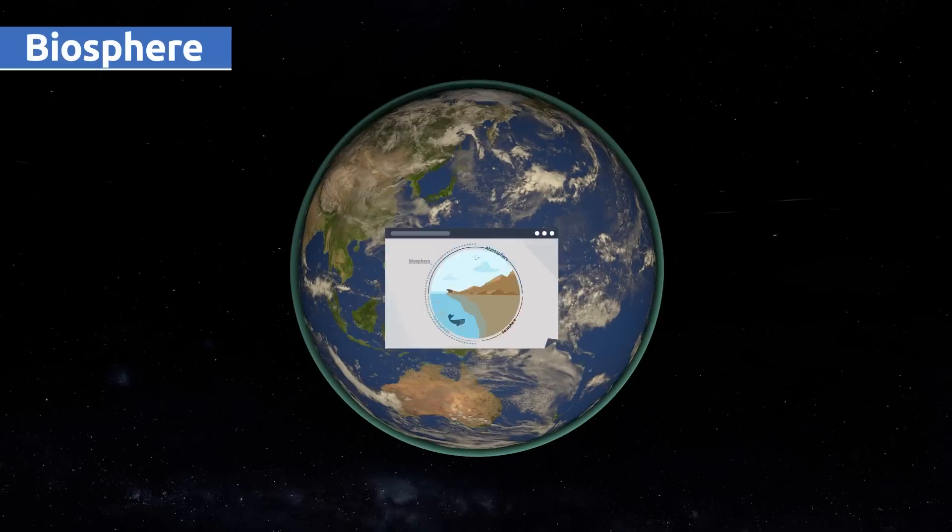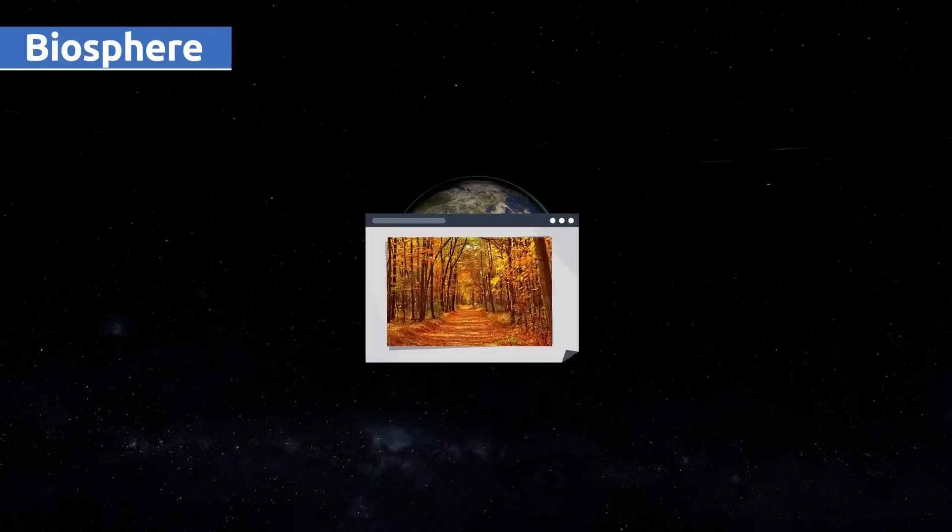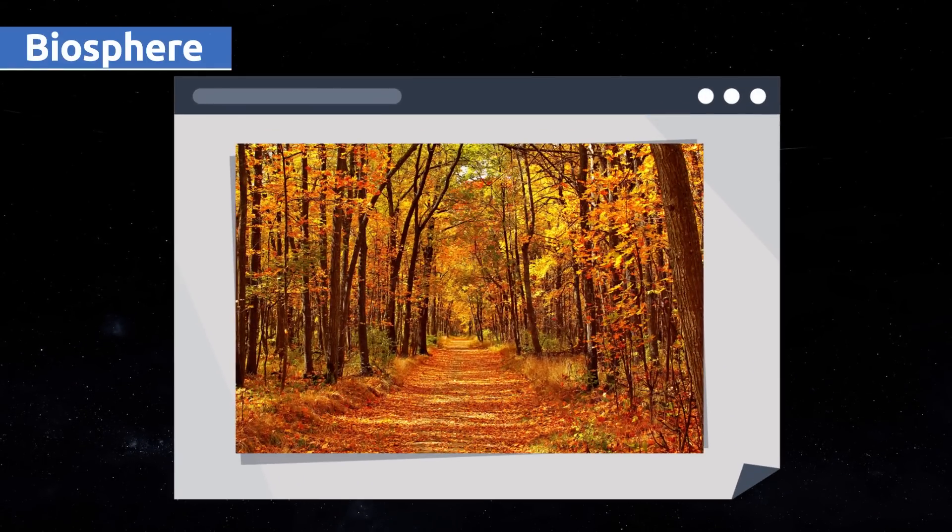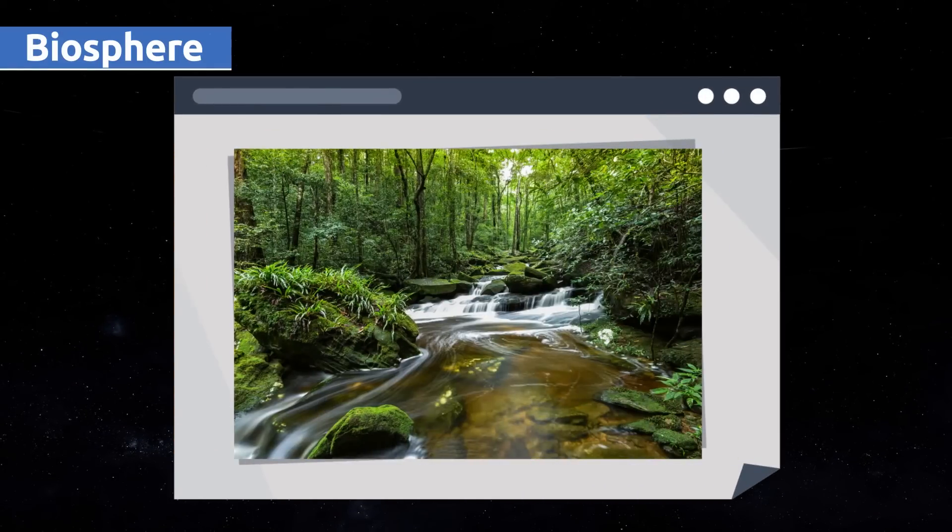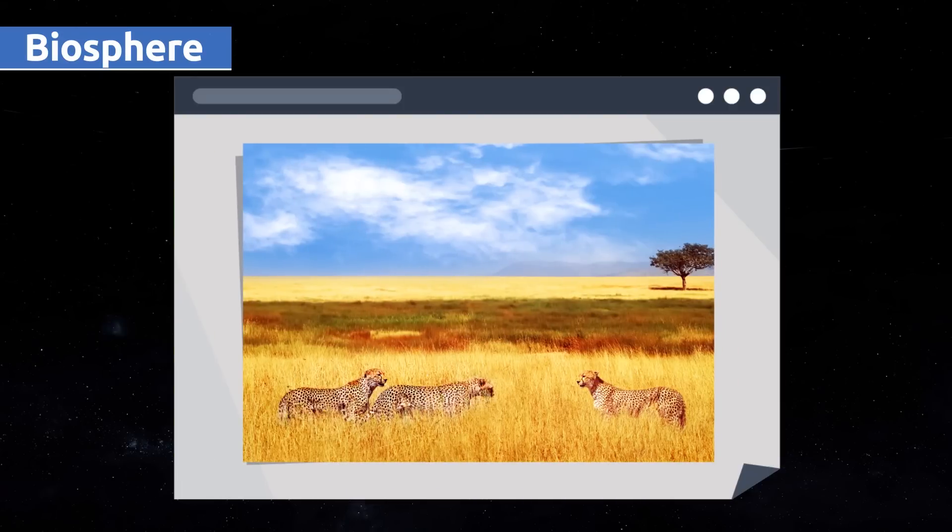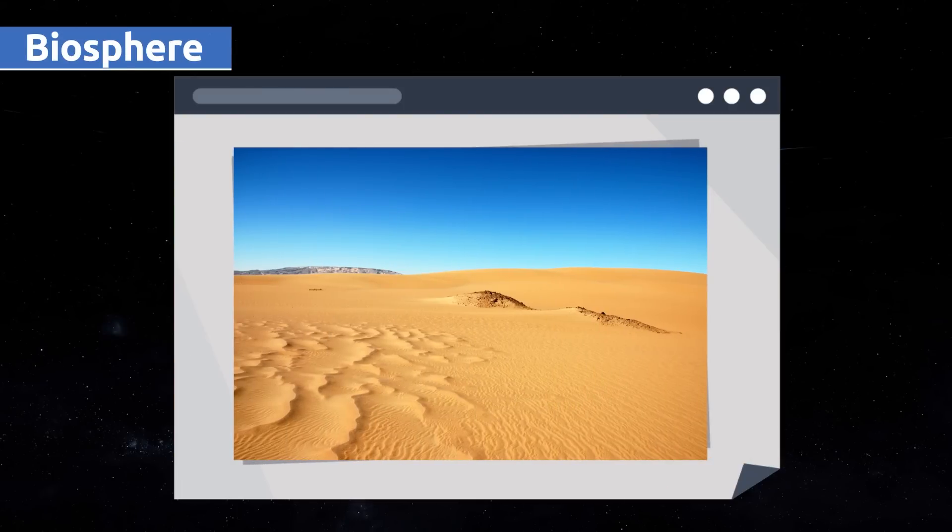The biosphere is made up of several ecosystems like the forest, the jungle, the savannah, the desert, or the tundra.